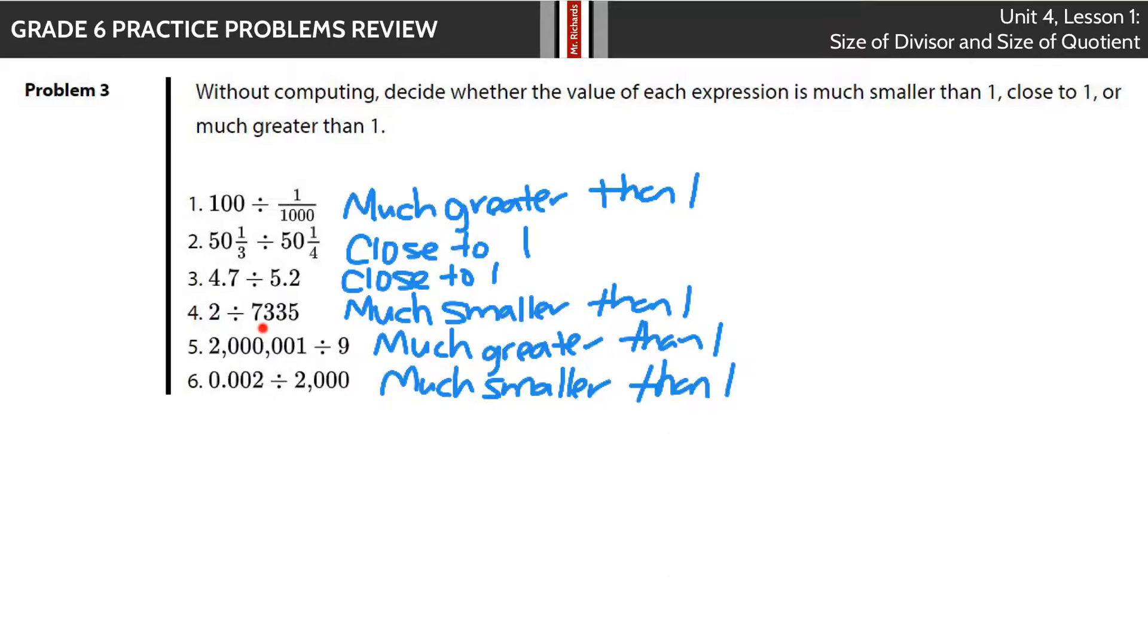Same with 4.7 divided by 5.2, that's going to be close to 1. If you have a small number divided by a bigger number, you're going to be a lot smaller than 1. A big number divided by a small number is going to be much greater than 1. And a small number, 0.002 divided by 2,000, you have a number that's already smaller than 1 and you're dividing it into 2,000 pieces, so it's going to be much smaller than 1.